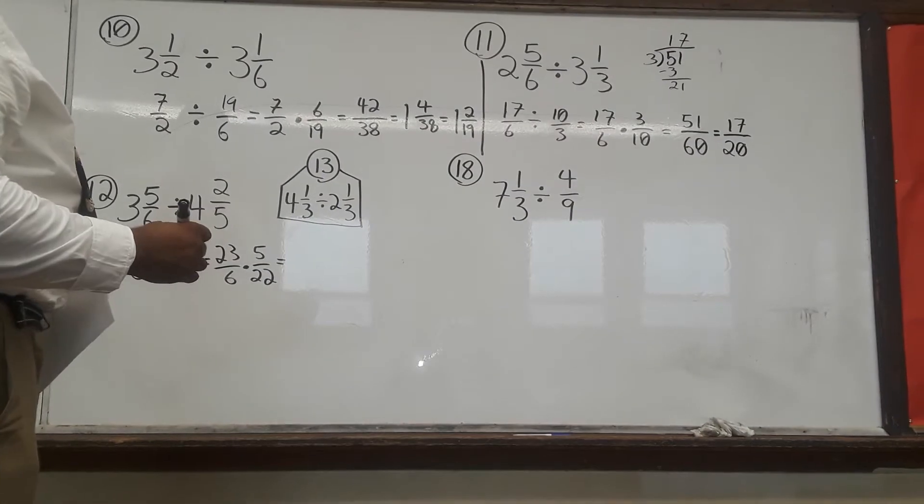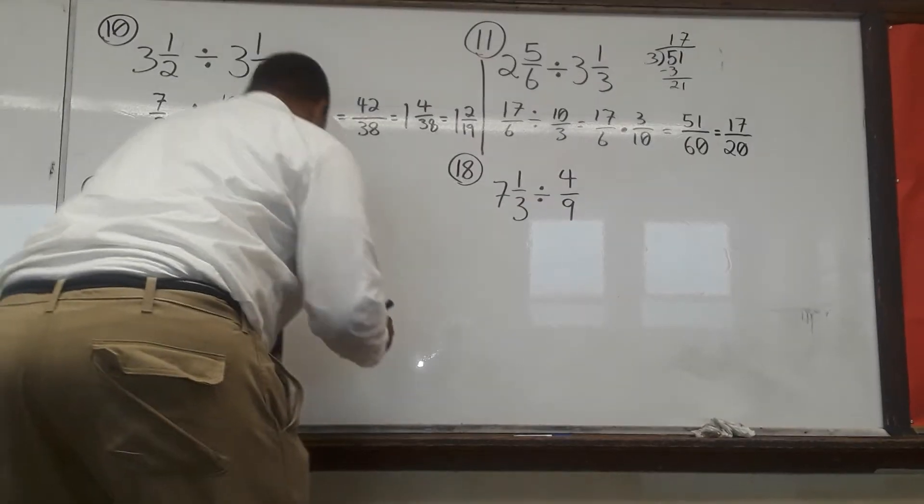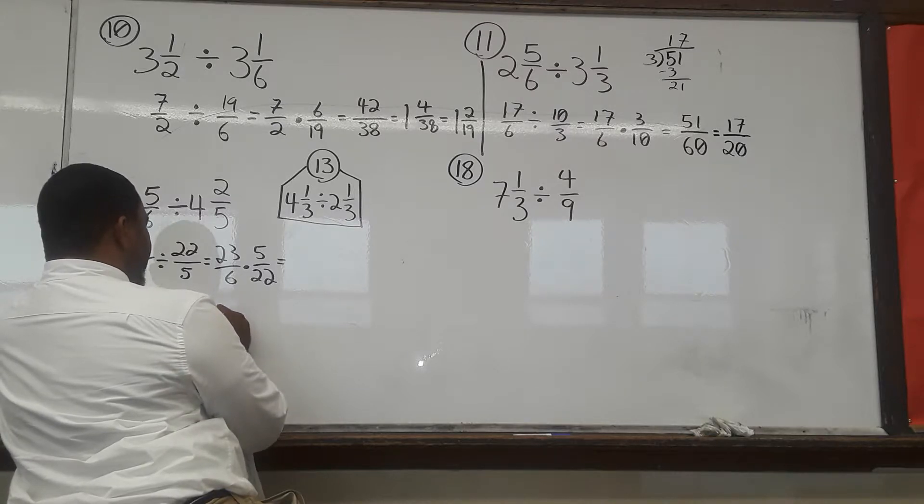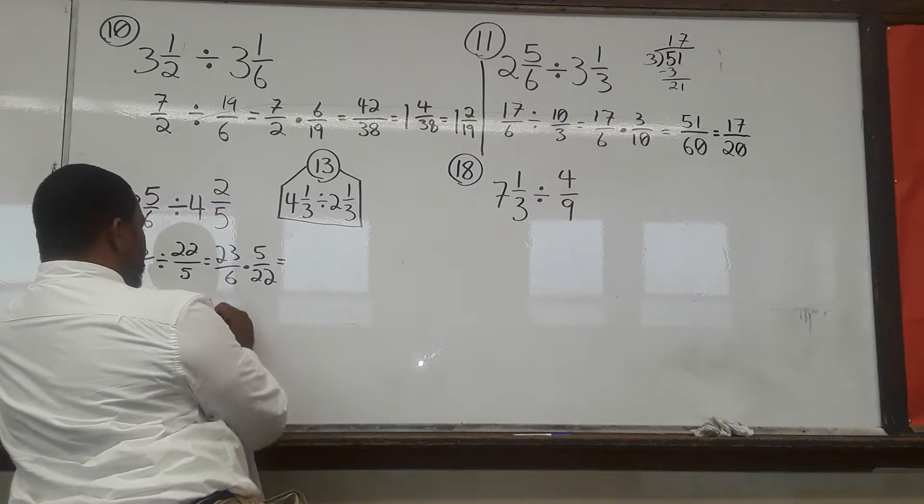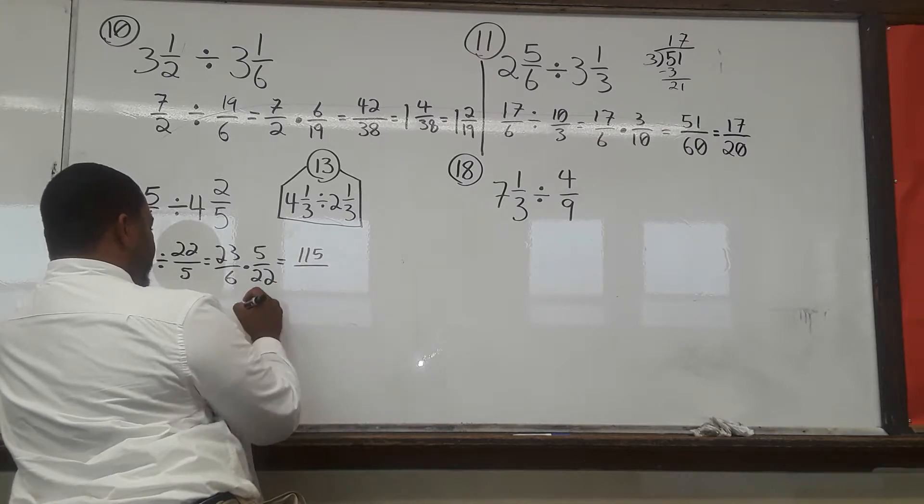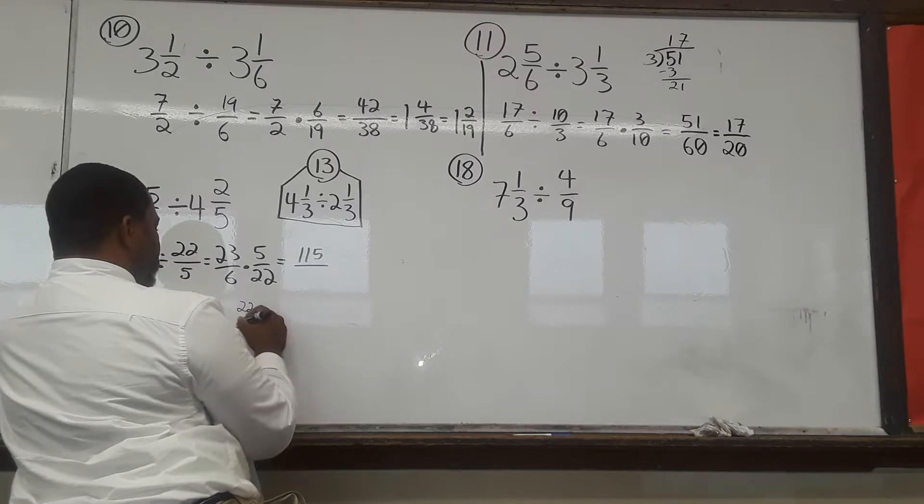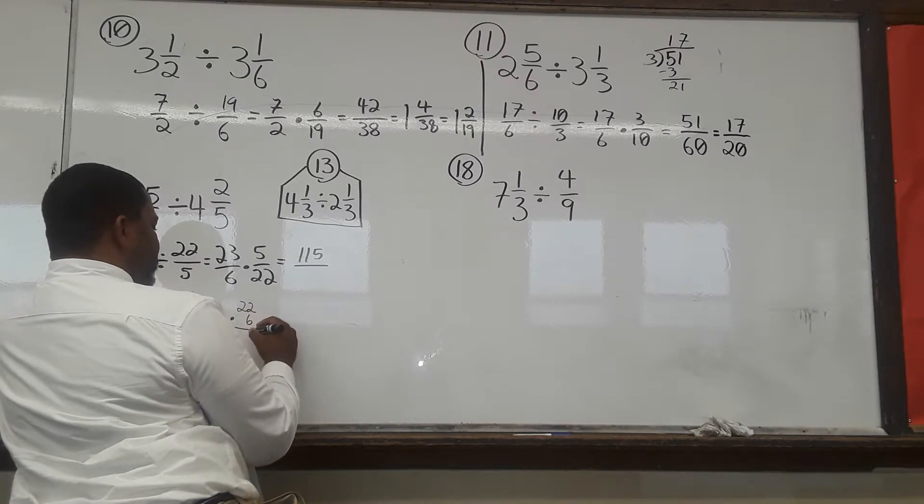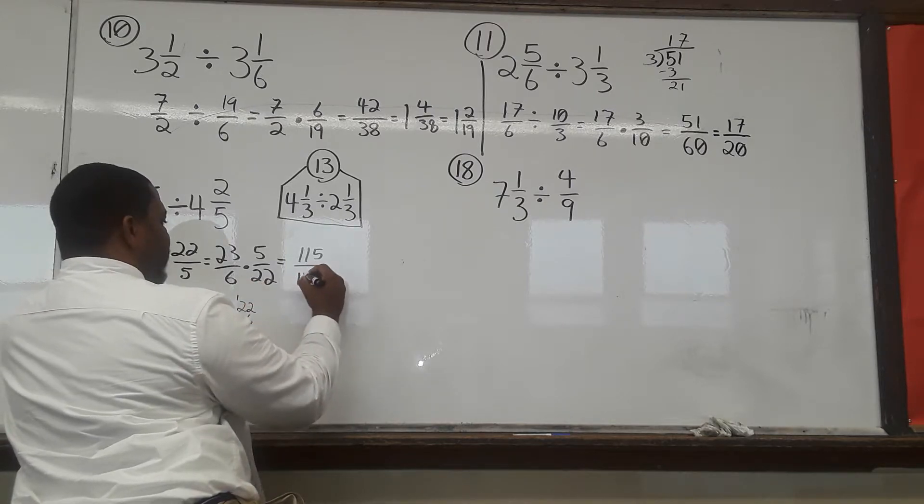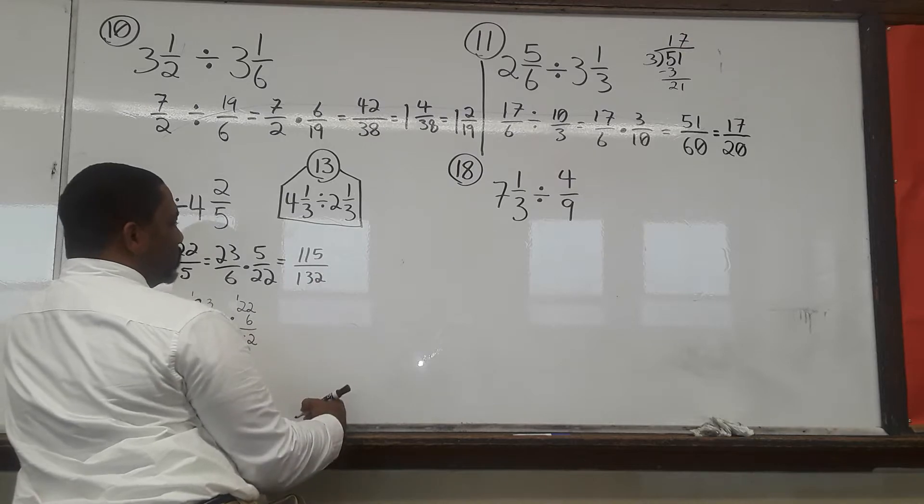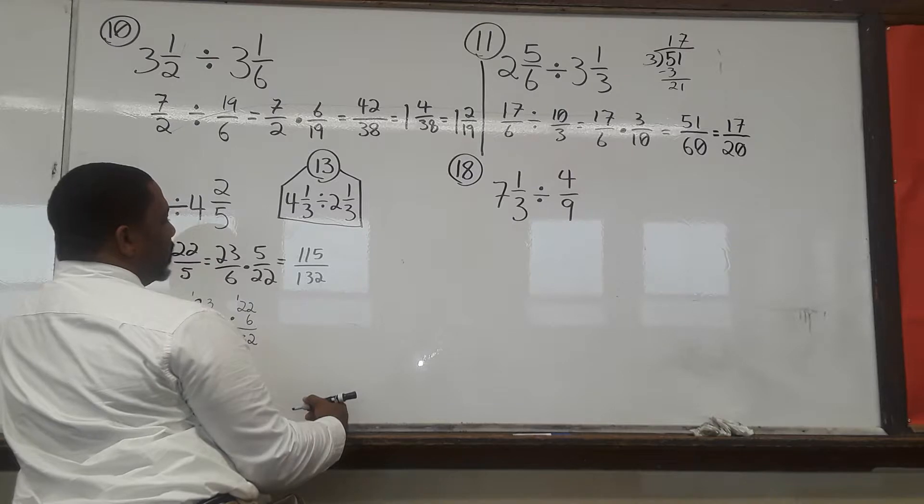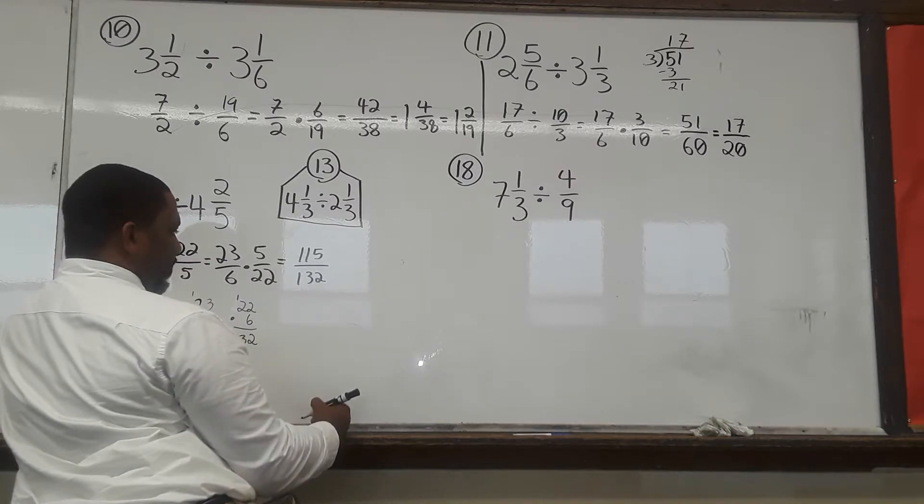So, now we've got 23 times 5, which I definitely don't know off the top of my head. 23 times 5 is 5, carry 1, 115. Over top of 22 times 6, 6 times 2 is 12, carry 1, 13. 115 over 132. Okay, and I'm going to leave that right there just like that.